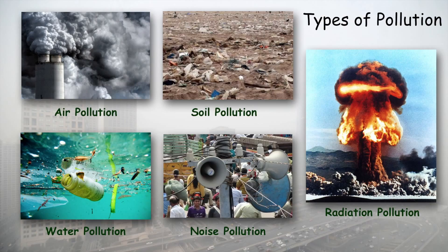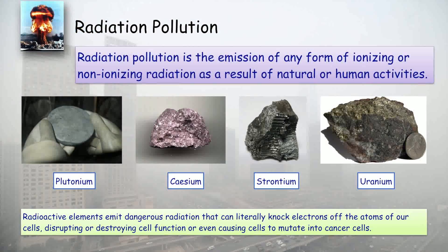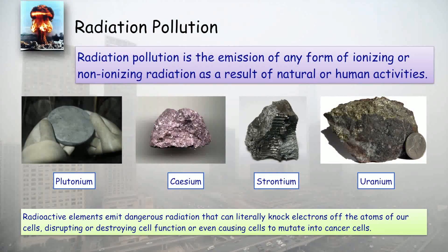Our next topic is radiation pollution. Some materials in this world can produce invisible rays that have very high energy, which can ionize some materials or living things — making them very dangerous for human beings as well as other living organisms. Radiation pollution is the emission of any form of ionizing or non-ionizing radiation as a result of natural or human activity.